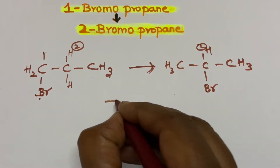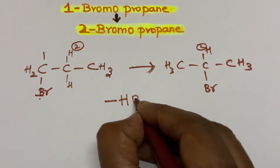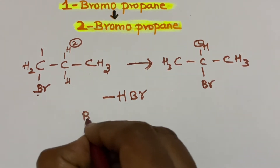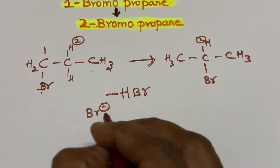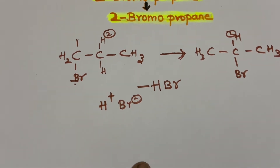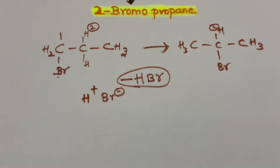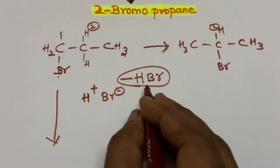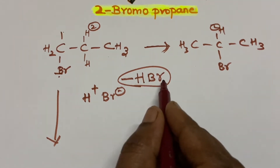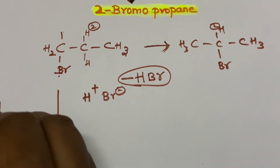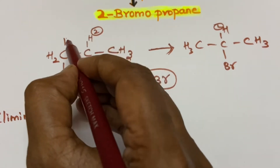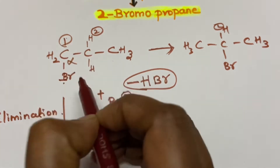So what we have to do is remove HBr. We are going to remove bromine as Br minus, and the HBr from the adjacent carbon atom also has to be removed. This process is called elimination — the removal of HBr is elimination.